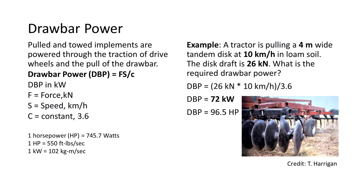Tractor-drawn implements are powered through the traction of drive wheels and drawbar pull. Drawbar power is available at the tractor drawbar to pull an implement. Calculate drawbar power as force multiplied by the speed divided by a constant 3.6.